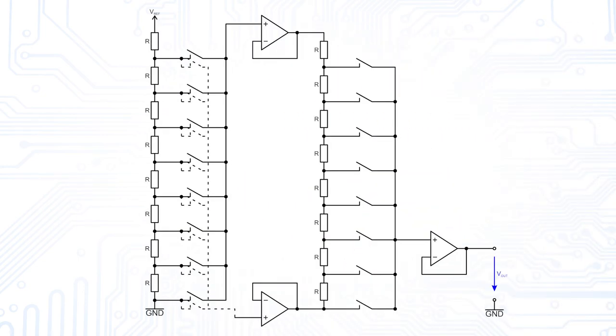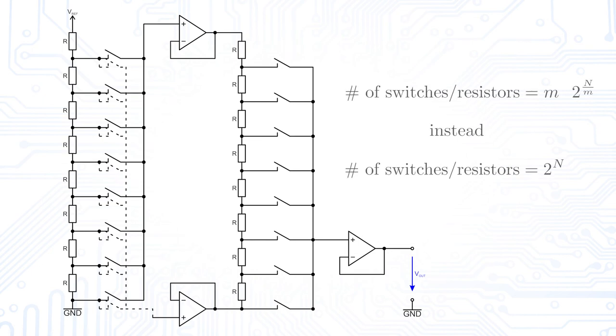String DACs can also be cascaded to avoid using 2 to the power of n resistors. In this configuration, only m times 2 to the power of n over m resistors are needed, where m is the number of cascades.